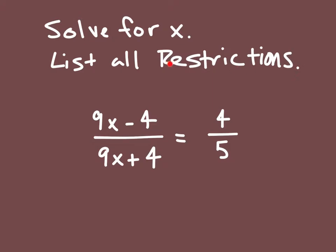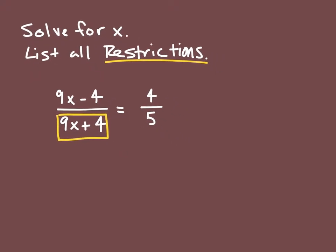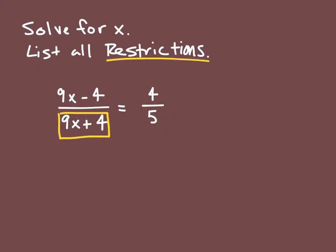Now the first thing I want to do is list our restrictions. Our restrictions are going to come by setting our denominator, the denominator that contains our variable, set that equal to zero. We're going to take 9x plus 4 and set that equal to zero.